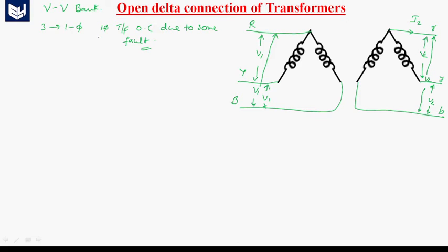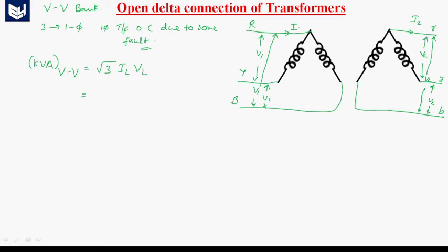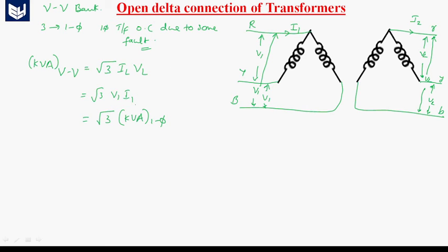The KVA rating of the open delta connection is root 3 into VL into IL. Here VL equals V1 and IL equals I1, so the KVA of open delta equals root 3 into V1 into I1. Since V1·I1 is the KVA rating of a single phase transformer, the KVA of the open delta connection equals root 3 times the KVA of a single phase transformer.